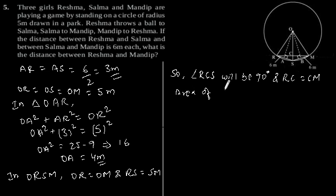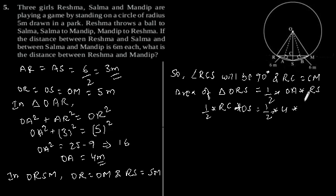So, area of triangle ORS is equal to 1 by 2 into OA into RS is equal to 1 by 2 into RC into OS.